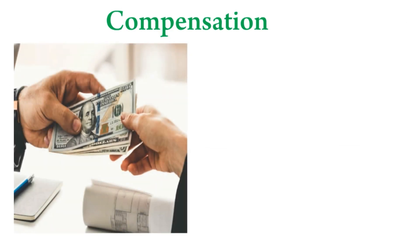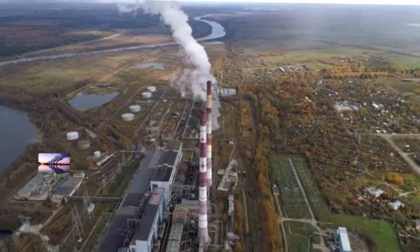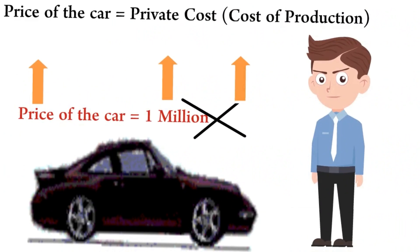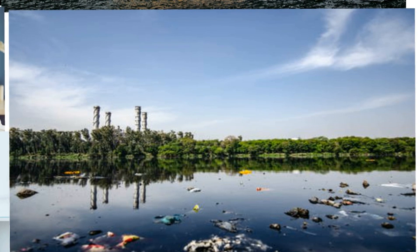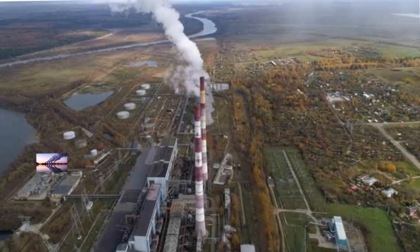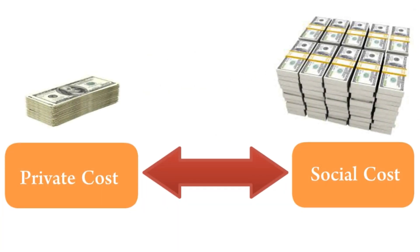Compensation may be in the form of monetary compensation to each person, construction of a community hospital providing health services free of cost or at a cheaper rate, or any other form of compensation. Since the firm does not take into account the sufferings of the people and the costs associated with it, and Mr. John purchases the car at a comparatively cheaper rate, the social costs borne by the people are not taken into account. The transaction between the firm and Mr. John leads to an externality. The external costs borne by the people residing near the plant who are not involved in the transaction between the firm and Mr. John is called an externality. Hence, pollution is a negative externality. In an activity generating negative externality, social costs are higher than private costs. Externalities create a divergence between the private and social costs of production.